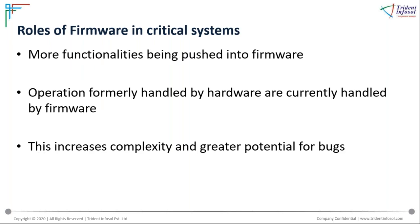Green Hills Software is primarily a software tool focused on firmware. Most modern embedded systems have shifted functionality toward firmware rather than hardware, which increases complexity and can create major bugs. You must follow a strict process when creating firmware for critical applications.